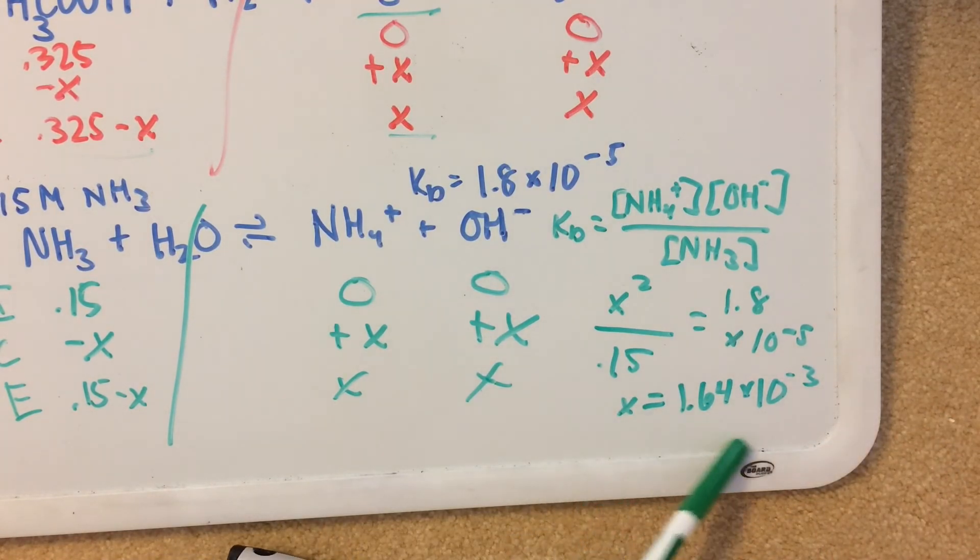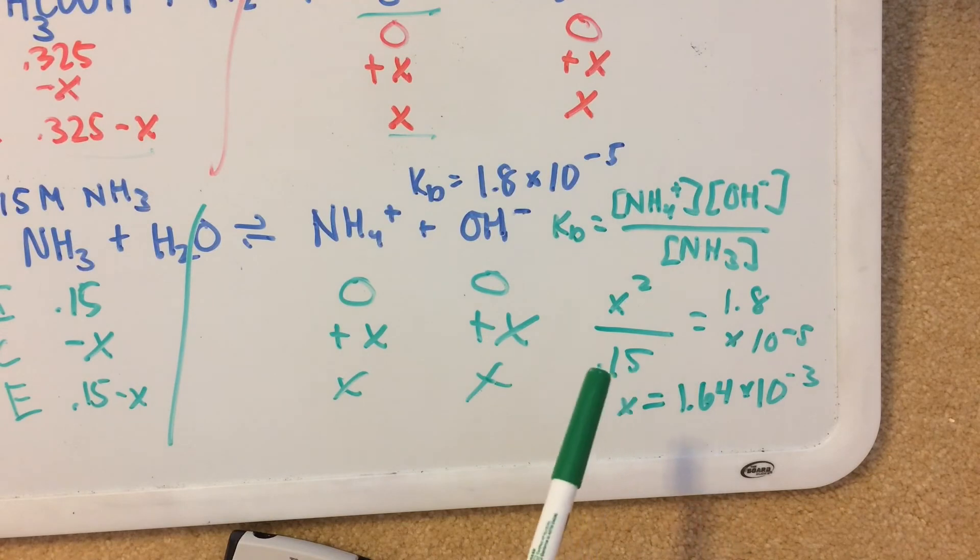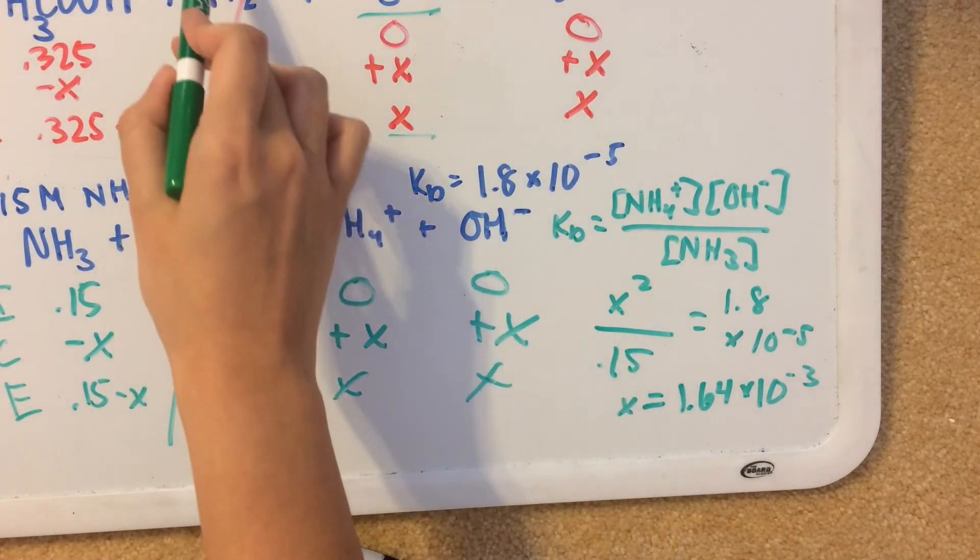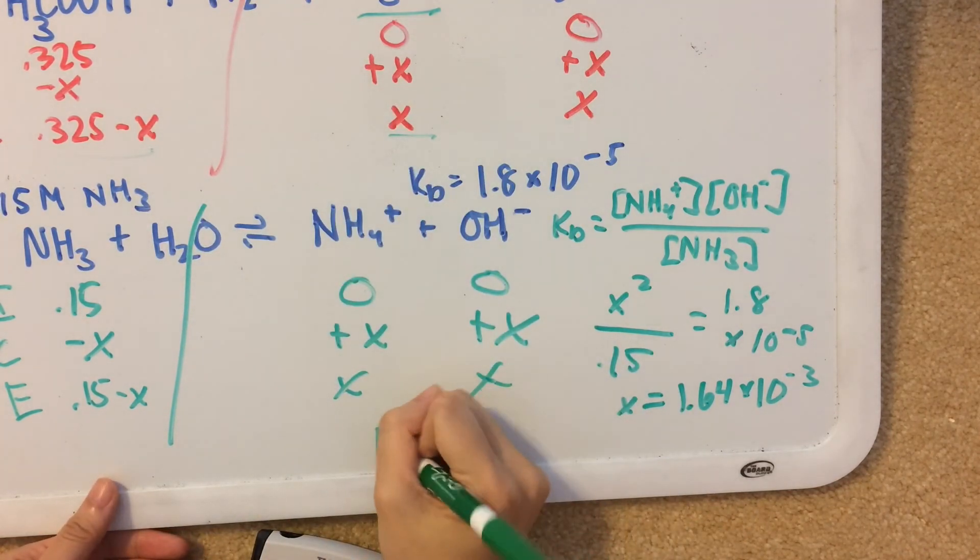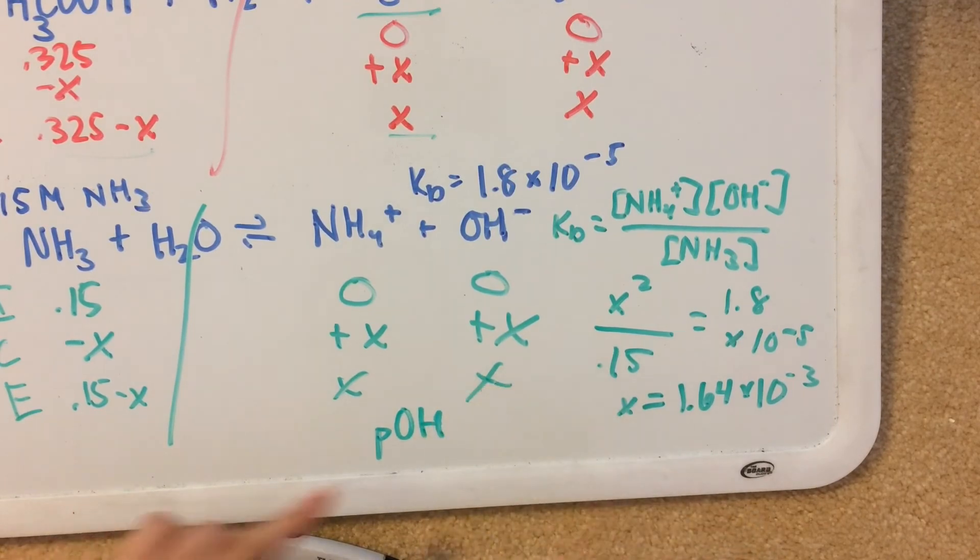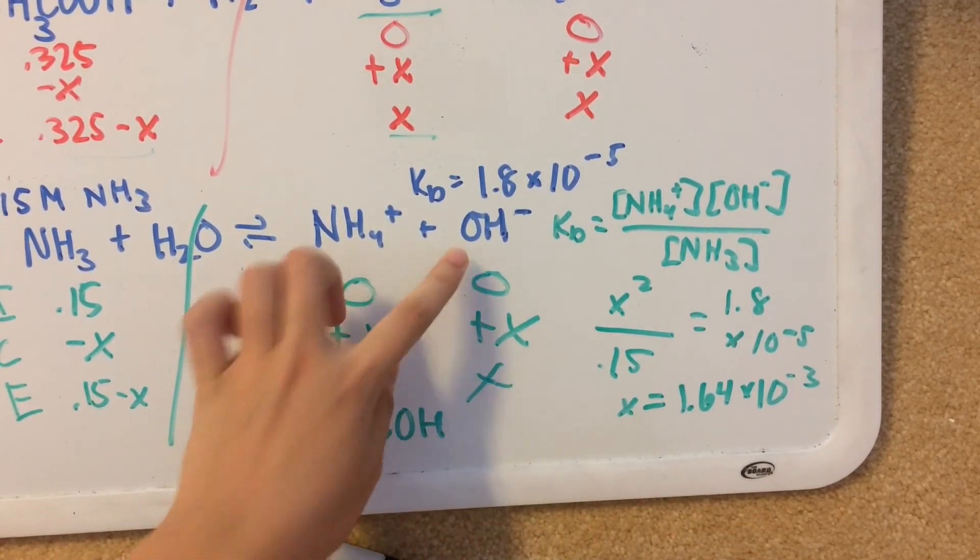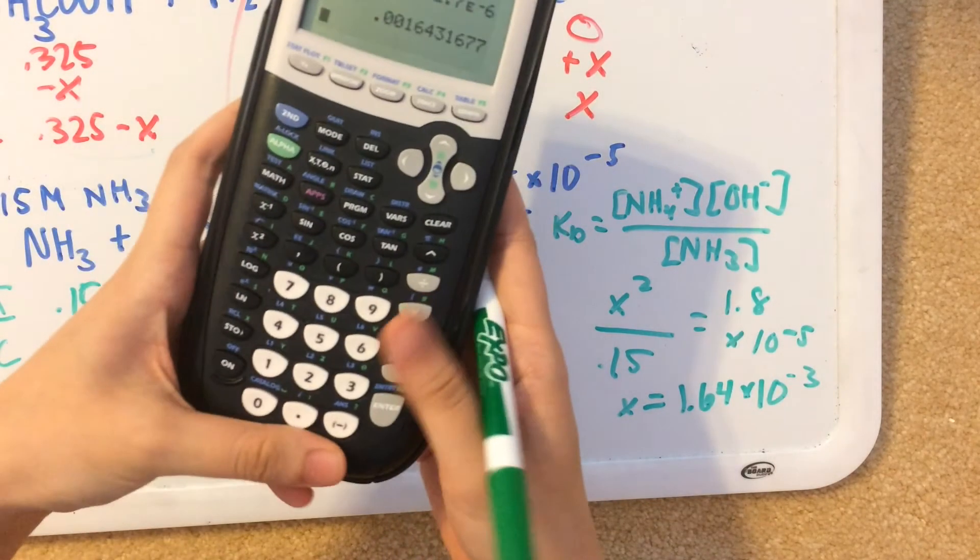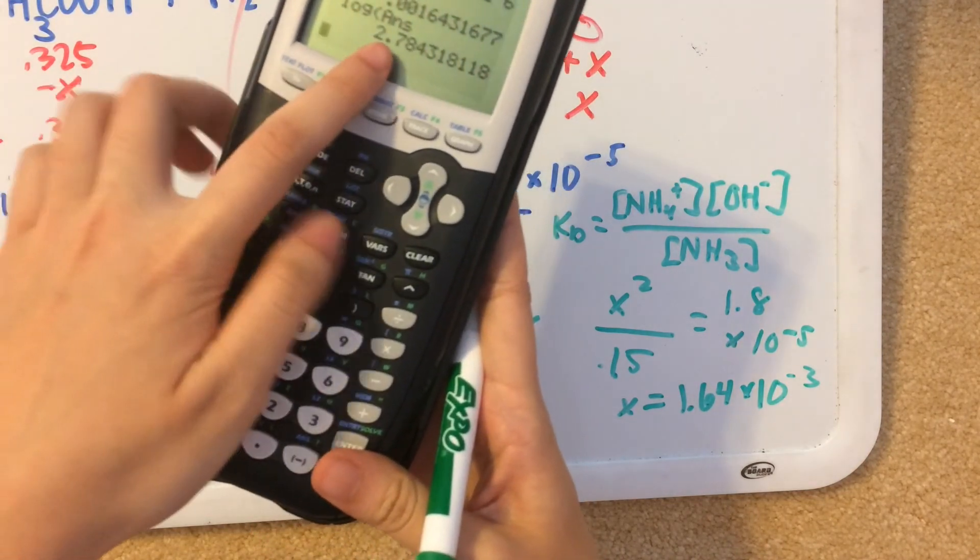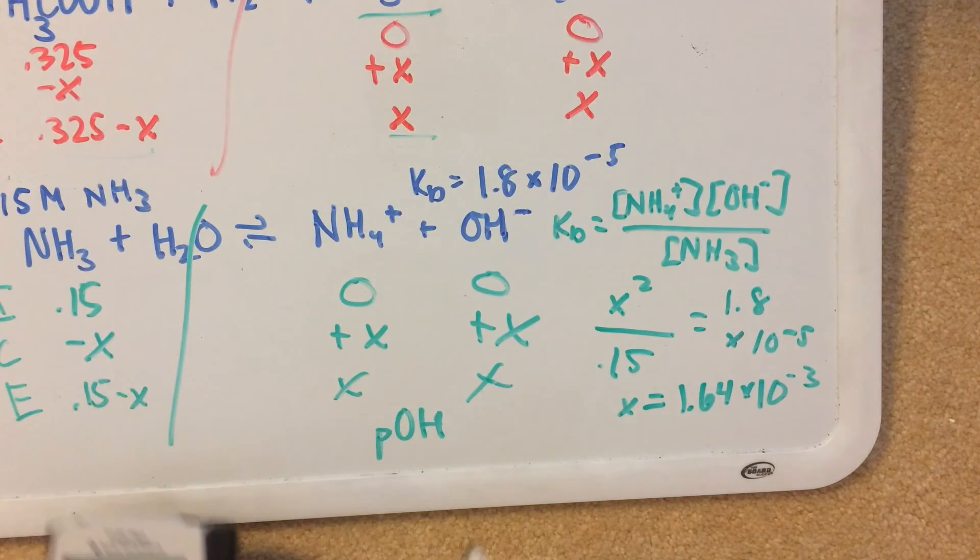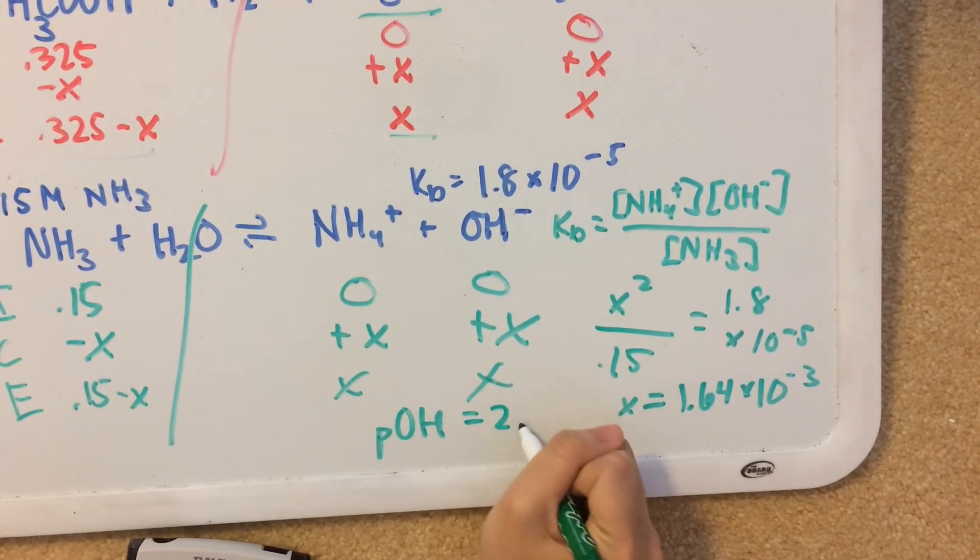So tricky thing here is that we didn't find the concentration of H plus, which is needed for pH. What we can do instead is find pOH, which is negative log of concentration of OH minus. So let's do that. Negative log of concentration of OH minus gives us about 2.78. So pOH is 2.78.